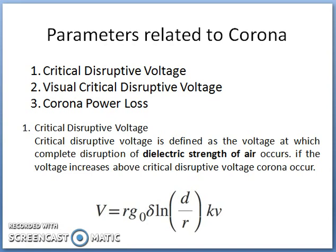The critical disruptive voltage is given by V = R · G₀ · δ · ln(D/R) kilovolts, where R is the radius of the conductor, G₀ is the potential gradient — which is the breakdown strength of air at a normal temperature of 25 degrees centigrade and a pressure of 76 centimetres of mercury. At this value, G₀ equals 30 kilovolts per centimetre, and D is the distance between the conductors.